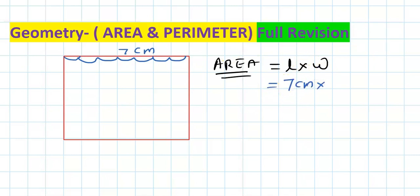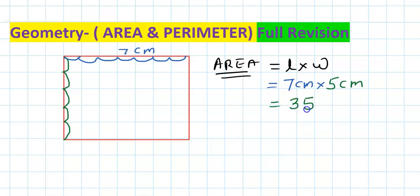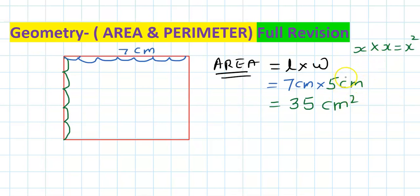Now the width is 1, 2, 3, 4, and 5. So width is 5 centimeters. If you multiply 7 times 5 you get 35. Centimeter times centimeter is centimeter square — just like x times x is x squared. So similarly, centimeter times centimeter is centimeter square. This is how we get area.